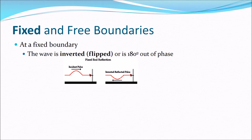A fixed boundary is, for example, when we take a rope and tie it securely to a pole, then flick one end. When the wave reaches the pole it cannot move, so it is a fixed boundary. When that happens, the wave is inverted — flipped over — and we say it is 180 degrees out of phase.